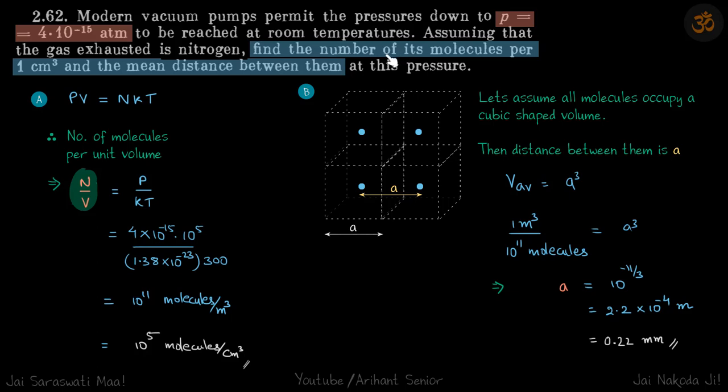We need the number of molecules per cubic centimeter, so we'll rearrange the equation with volume on one side. This gives us what we need: number of molecules per unit volume equals P divided by kT.